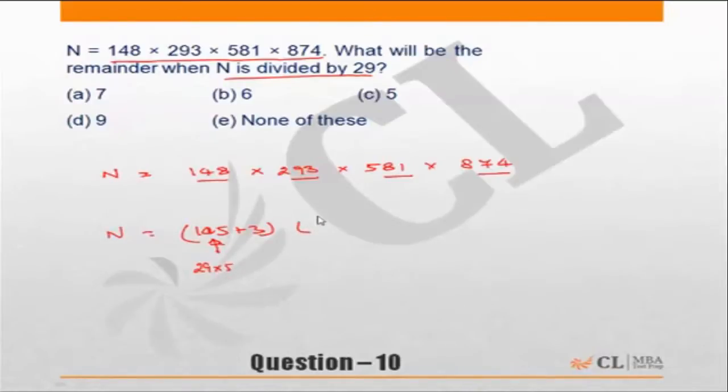And 293 is 290, which is a multiple of 29. So this is 290 plus 3. 581: 290 is a multiple, so obviously 580 - 29 into 2 is 580. So I have 580 plus 1.